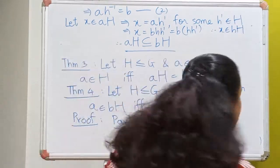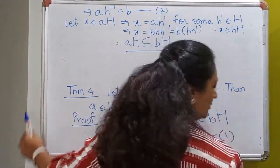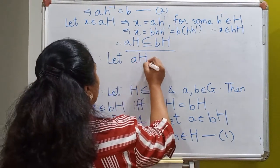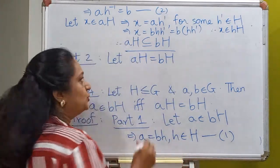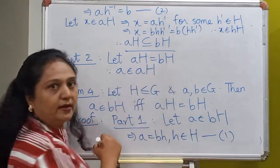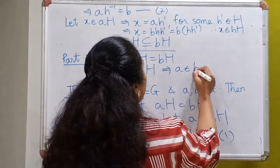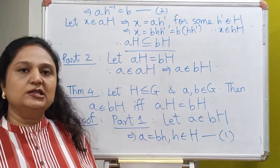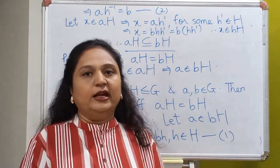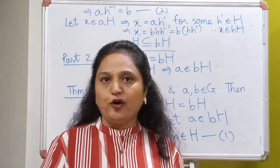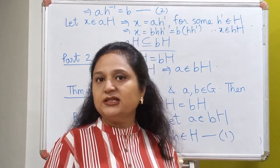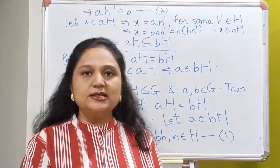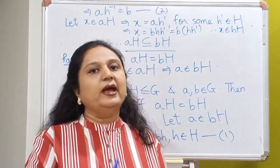For the converse, let us assume that AH is the same as BH. By Theorem 2, A belongs to its own coset AH, and since AH equals BH, A will belong to BH, completing the proof. Some of you may be getting a déjà vu feeling that you have seen these kinds of properties before — perhaps for equivalence classes. Just hold that thought; in the next couple of lectures I will elaborate more on this.